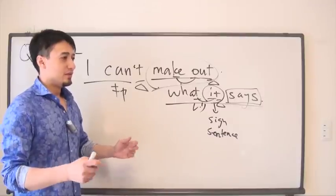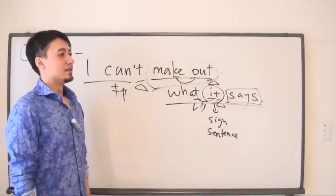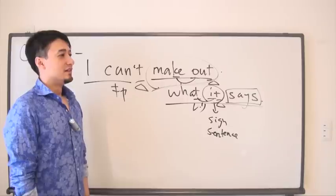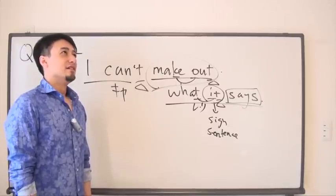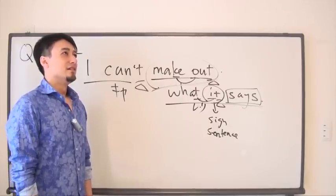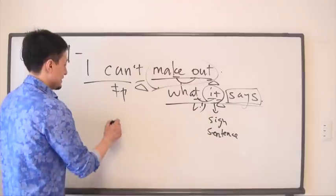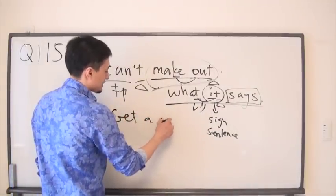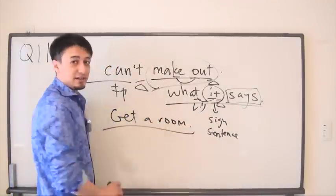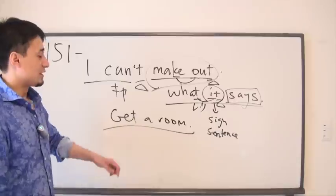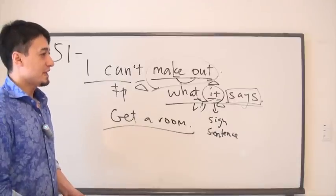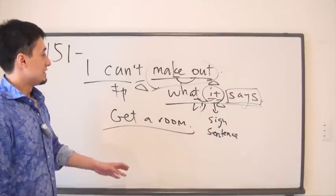In those situations you use 'make out.' 'Are they making out?' Also, 'get a room' - if you're going to do that, get a hotel room. We don't really say that in Japanese.